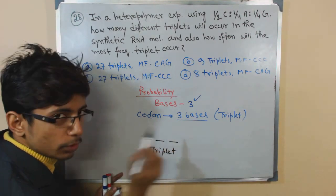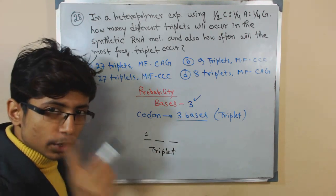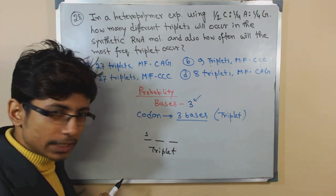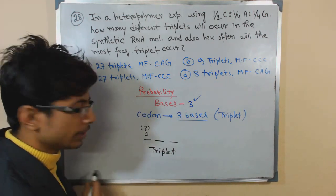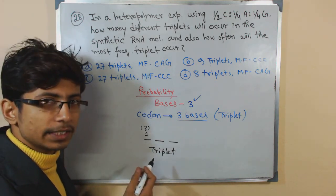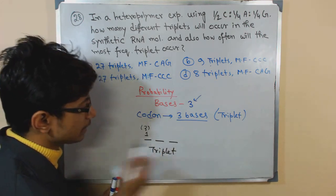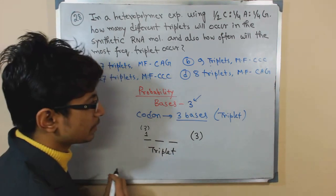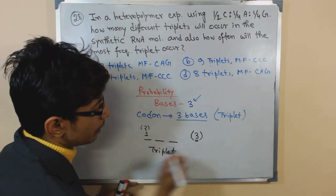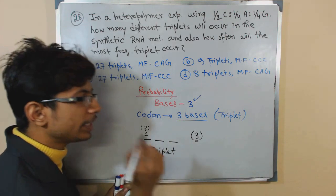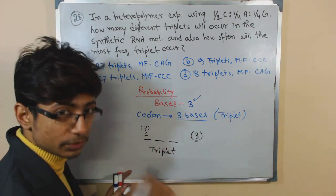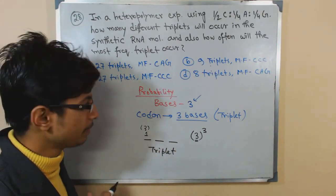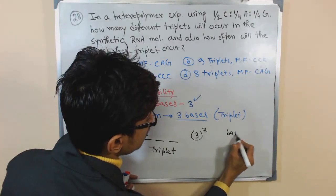We have three different gaps for the triplet codon: position one, position two, and position three. In each position, the probability of placing one base is one by three. The formula here is: the number of bases that is present - in this case three - and how many bases we are considering, we are considering three bases as a triplet, so we add that as a power. The formula is the number of bases raised to the number of bases as codon.